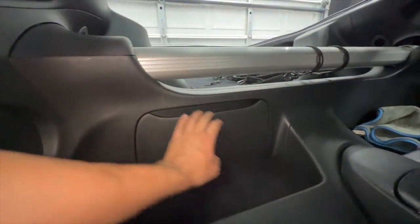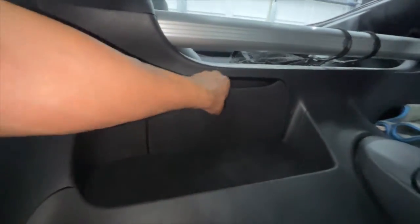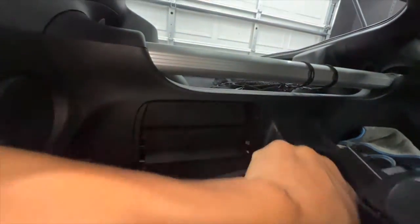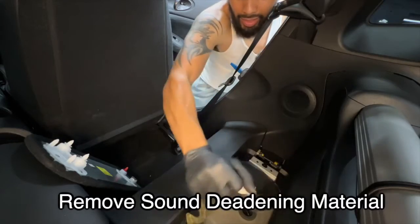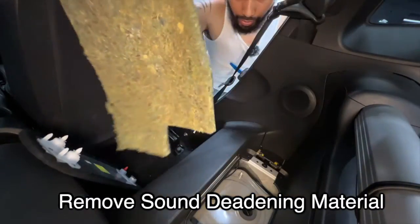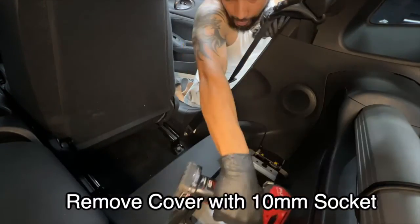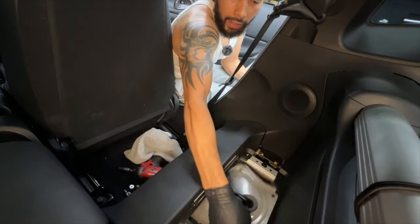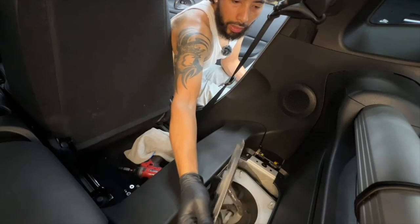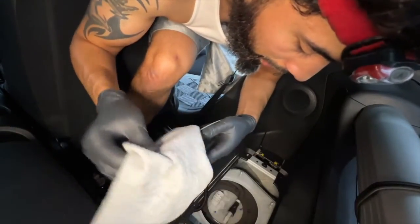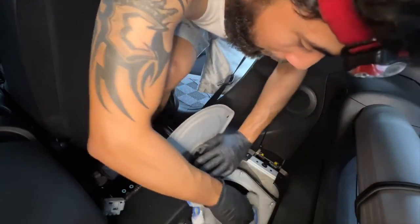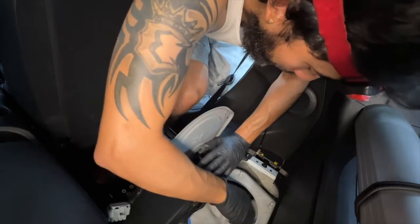So the easiest way I found to remove this panel here is to pull this all the way down and up. Then you'll be able to grab this and go up with it. See there's a lot of road debris here.